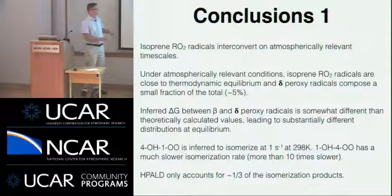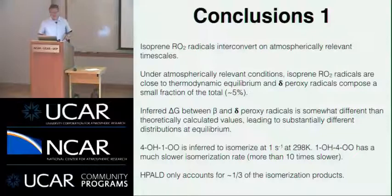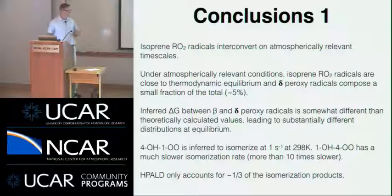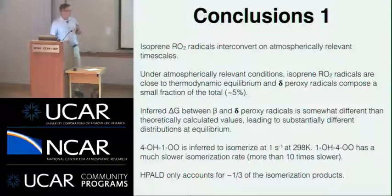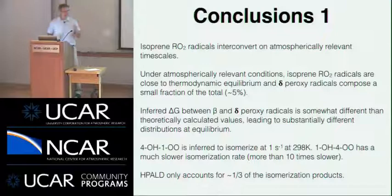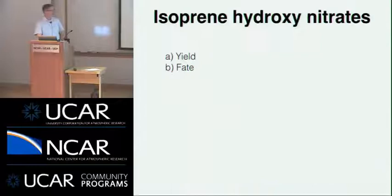The 4-OH-1-O2 peroxy radical isomerizes fairly rapidly at about 1 per second, so most of that in the atmosphere will be isomerizing. The equal-reactivity point would be 5 ppb NO, so only in the most NOx-polluted regions will bimolecular reaction be competitive with isomerization. HPAL only accounts for one third of the inferred isomerization rate from the beta products. We account for another third in smaller carbonyls like hydroperoxy glycolaldehyde and hydroperoxy acetone. But there still seems to be a third that's missing — one hypothesis is some low-volatility organic compounds that may be important for organic aerosol.